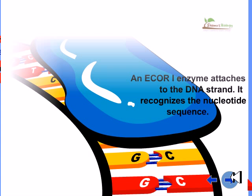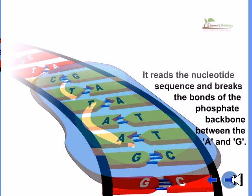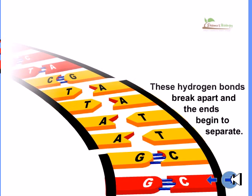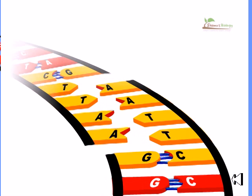An ECO-R1 enzyme attaches to the DNA strand. It recognizes the nucleotide sequence, reads it, and breaks the bonds of the phosphate backbone between the A and the G. The bonds between the nucleotides are not strong enough to hold the two DNA strands together. These hydrogen bonds break apart and the ends begin to separate.